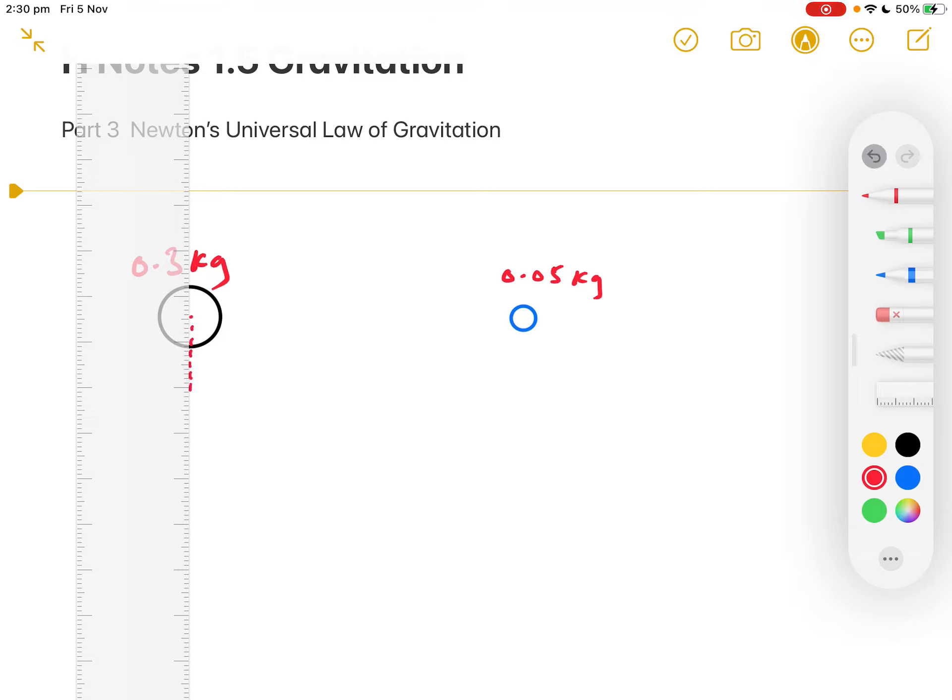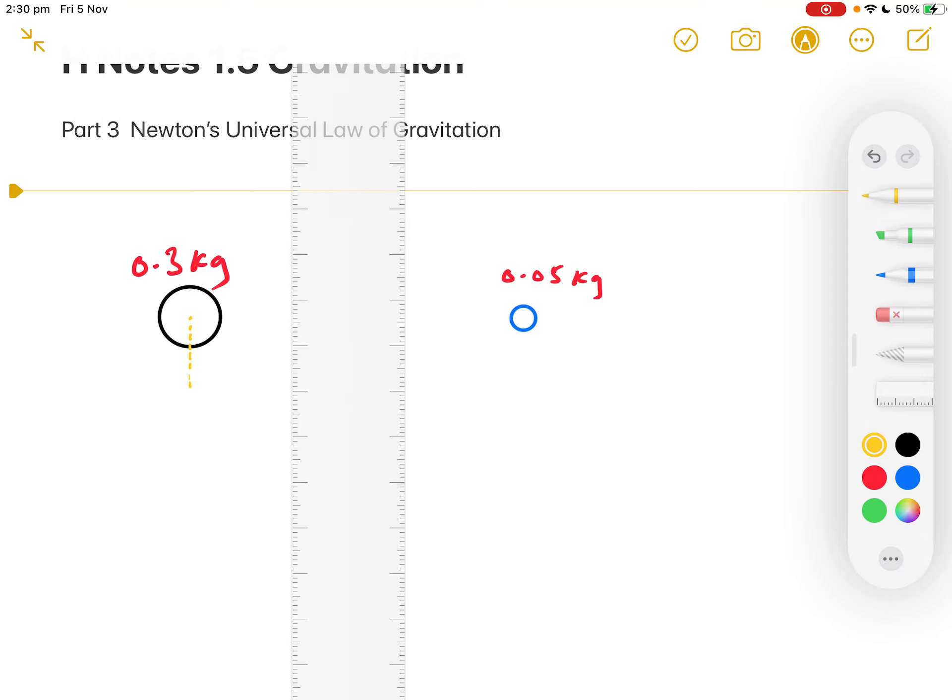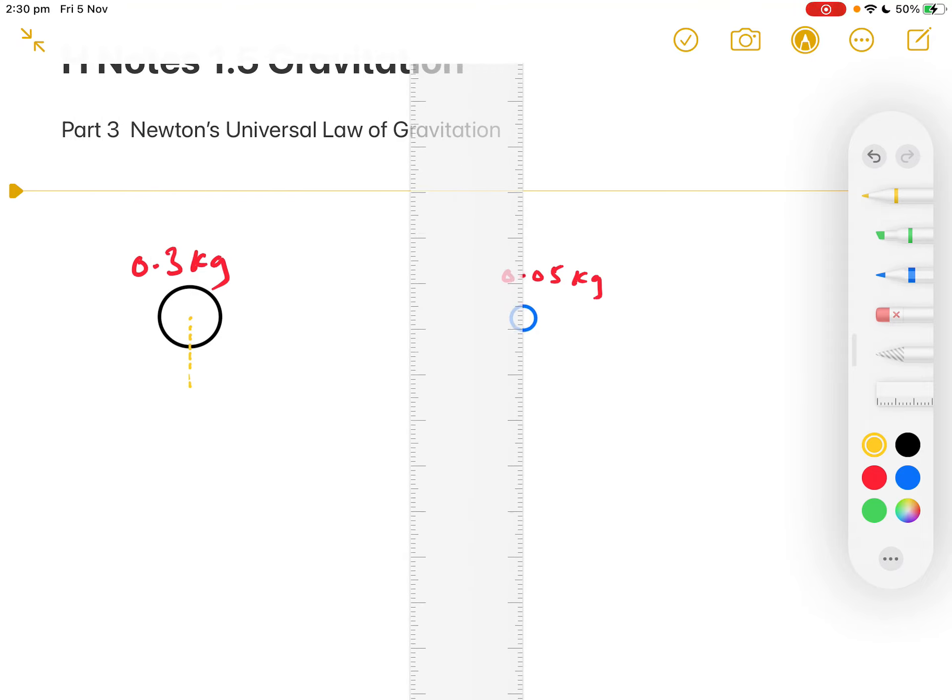How far apart they are from each other is important and we always measure the distance between two bodies from their geometric centres. So, if we deal with spheres as we are here, we go from the centre of one to the centre of the other.